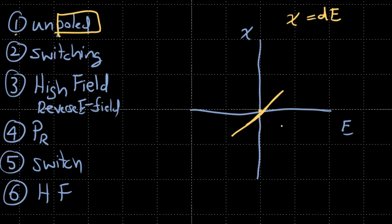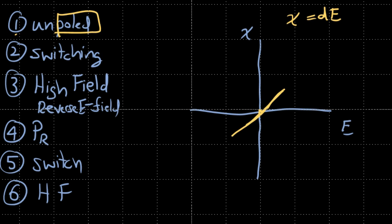However, if you apply large fields, some interesting behavior occurs. As we keep applying a large positive field, this linear relationship remains roughly constant — it curves slightly at very high fields but doesn't show a very large change. As we increase the electric field, our strain increases; originally we had a domain wall contribution, but we saturate that domain wall contribution at high field.